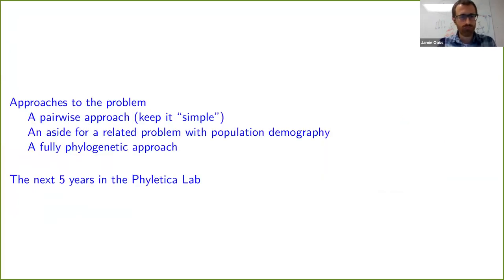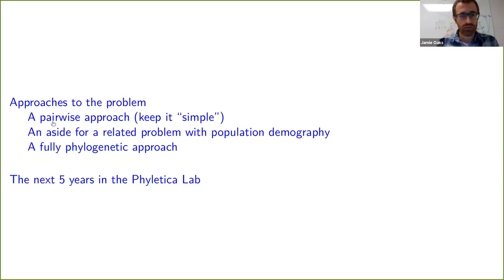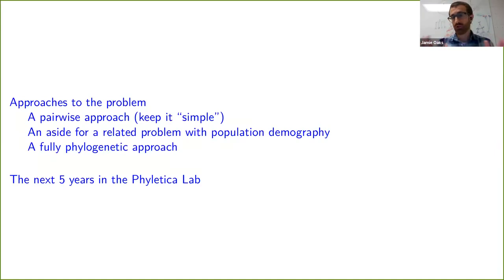So the roadmap for the rest of this talk: I'm going to talk about three different approaches my lab group has taken at getting at this problem, and then I'll talk a little bit about where I see this work going in the future. First I'll introduce a pairwise approach we took, then take a brief aside on a related problem regarding population demography rather than divergences, and then I'll talk about a fully phylogenetic approach we've recently taken.